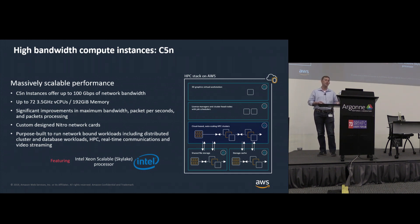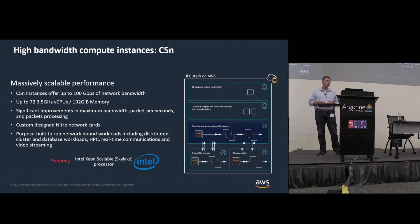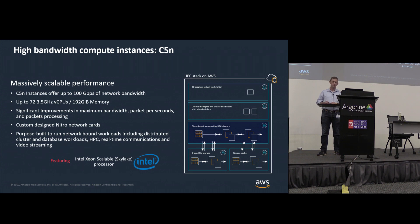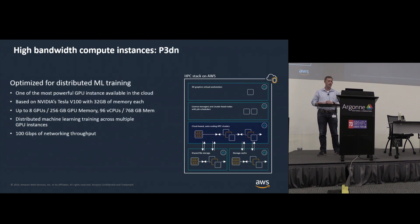With the new EFA fabric adapter you get lower latency — down from our standard 30 to 40 microseconds down to 15 microseconds. We're going to continue to improve and drive that down, as well as keep those ranges tight for workloads that really care about jitter.